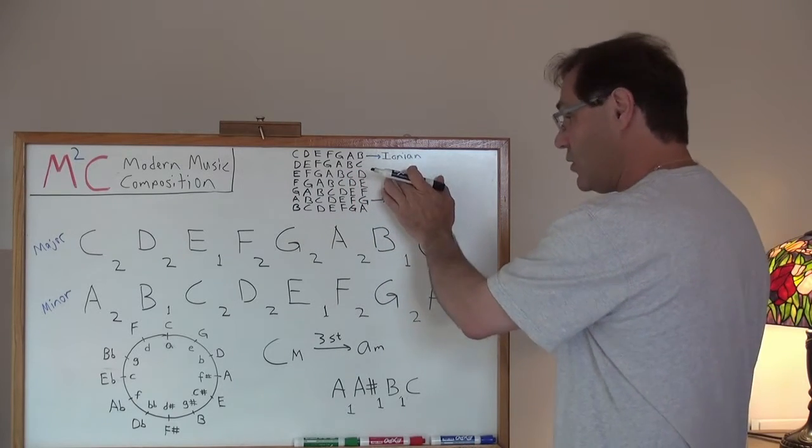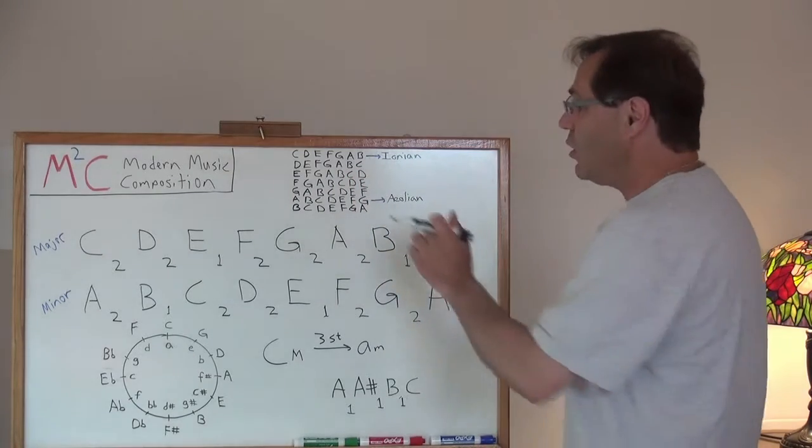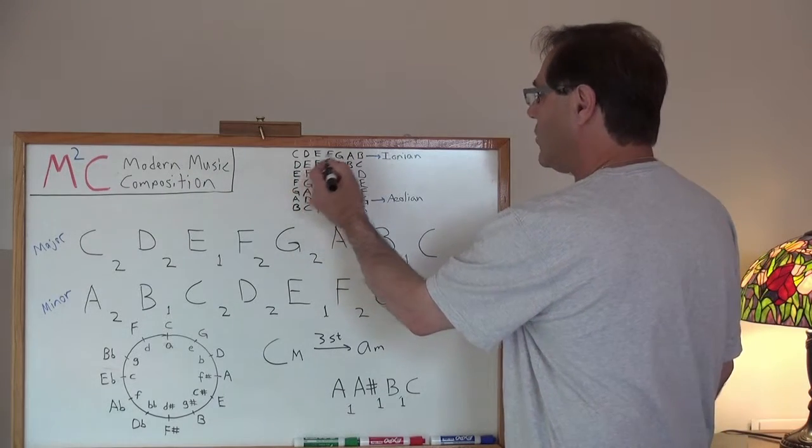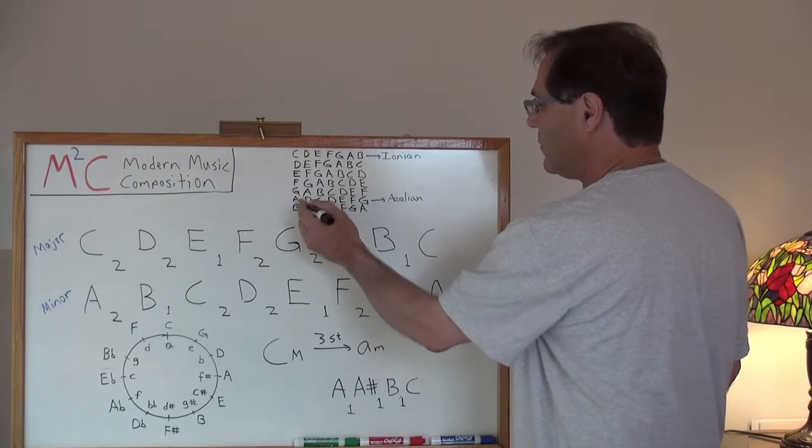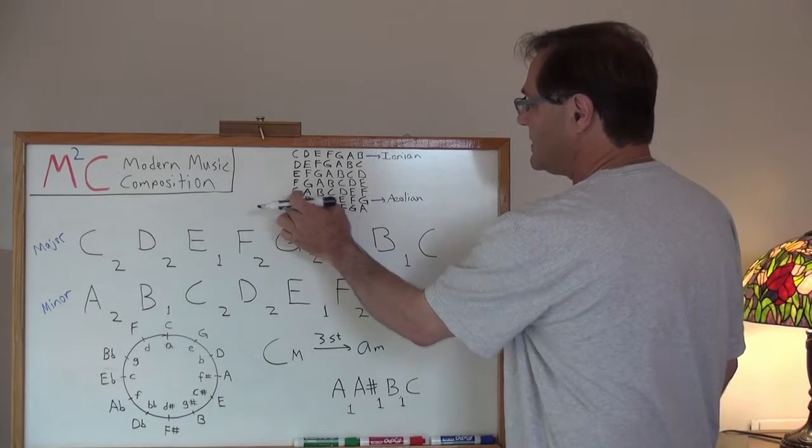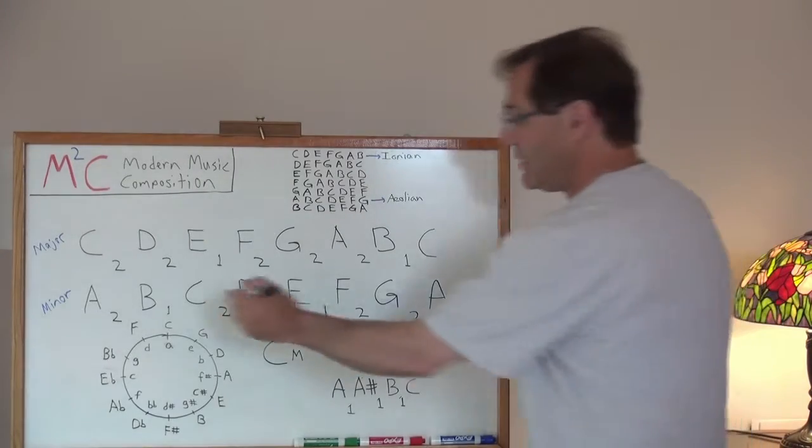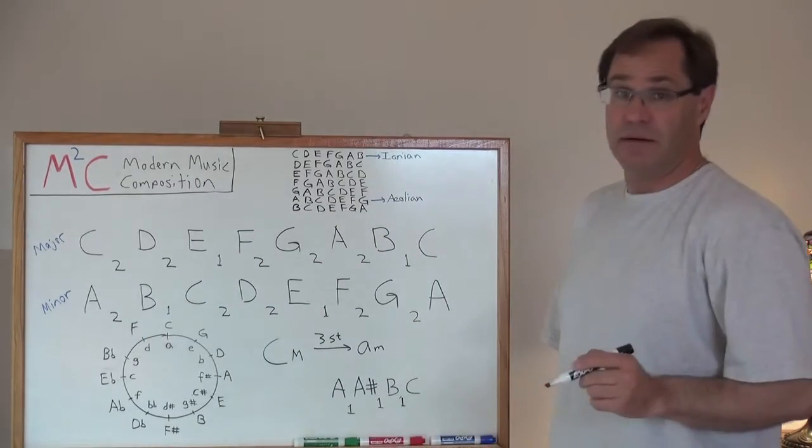If we want to get to the next mode, which is the Phrygian mode, we do an inversion on the Dorian mode. And so on and so forth until we get down to the sixth mode, which is called Aeolian. That happens to be the minor diatonic scale.